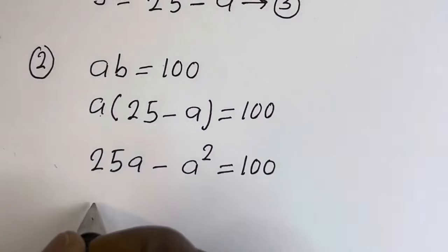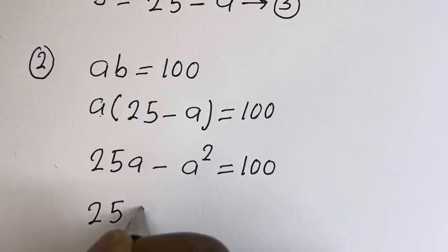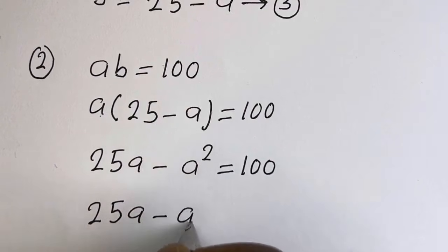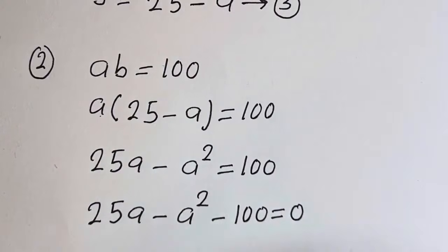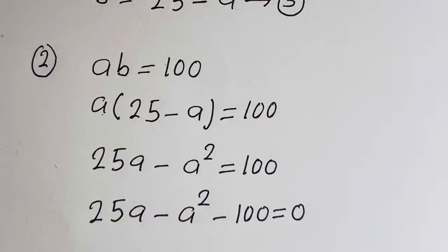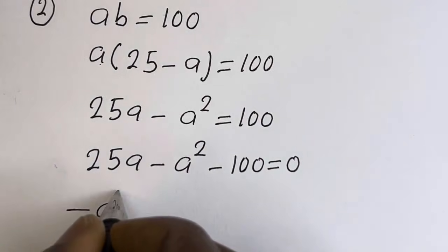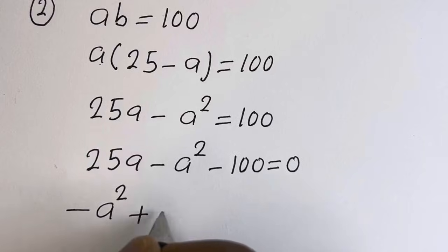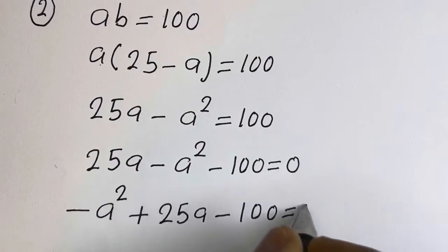Then this gives us 25A minus A squared minus 100 is equal to 0. Rearranging: minus A squared plus 25A minus 100 is equal to 0.